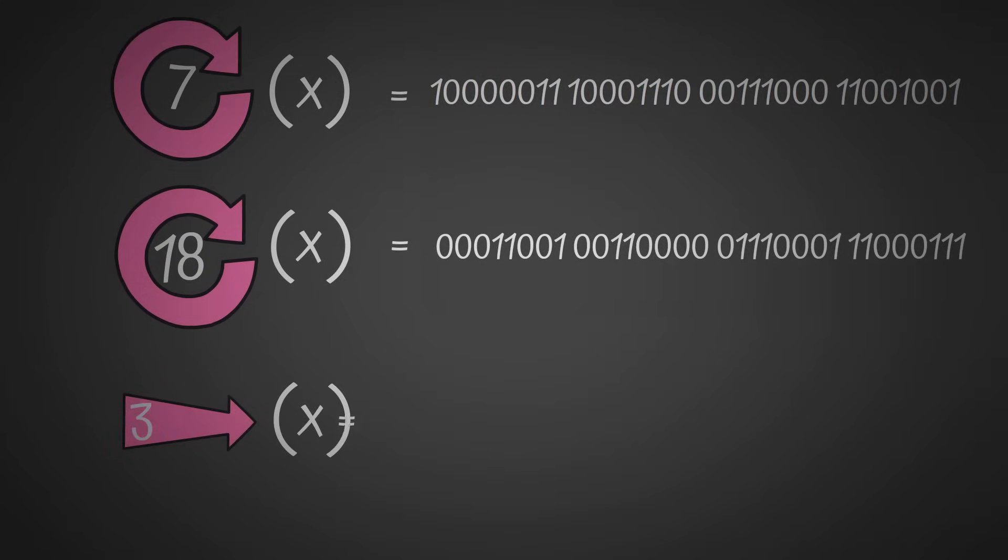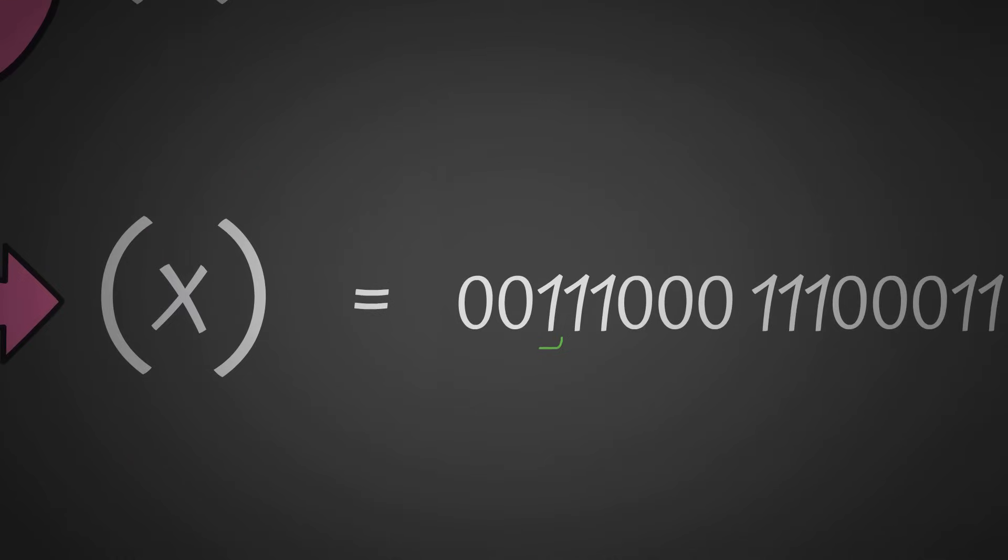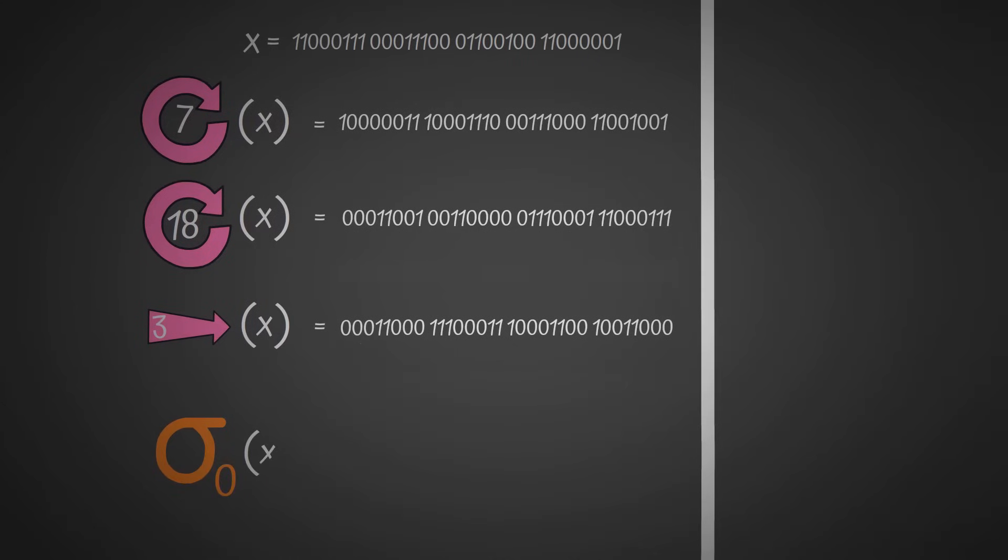Finally, we get something called a right shift of 3, where we do the exact same as we have just done. But instead of looping those numbers around, we just set all of these to 0. You can think of them as being pushed off a cliff or however you want to think of it.